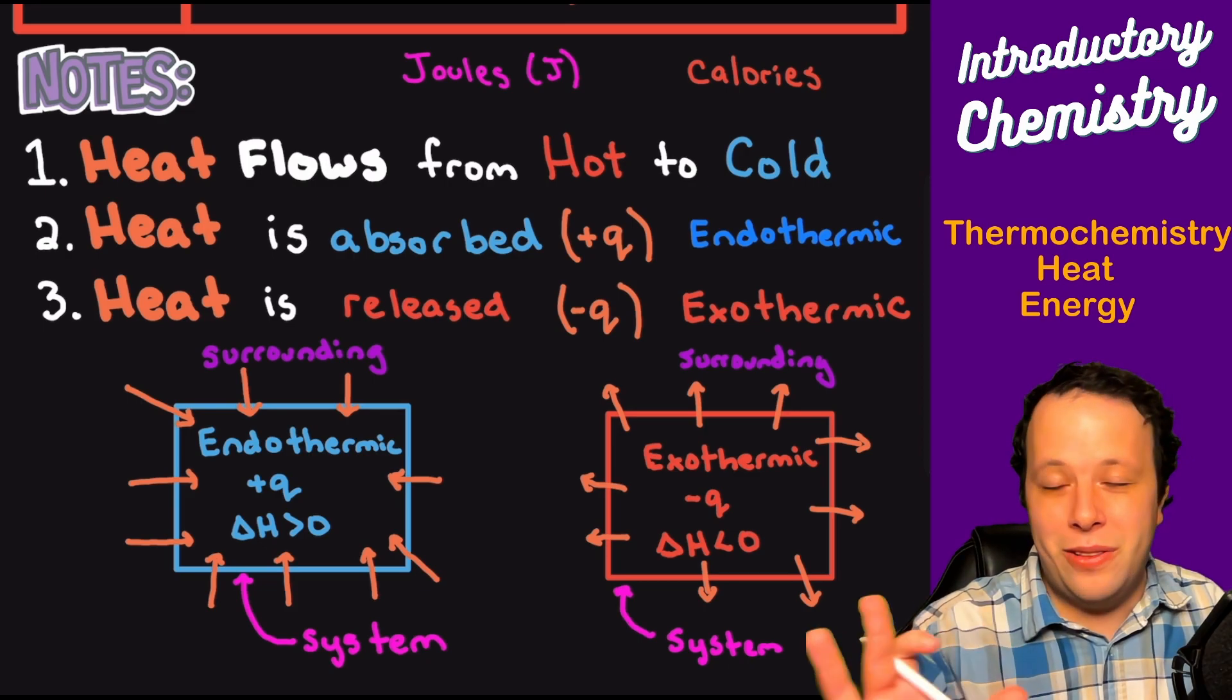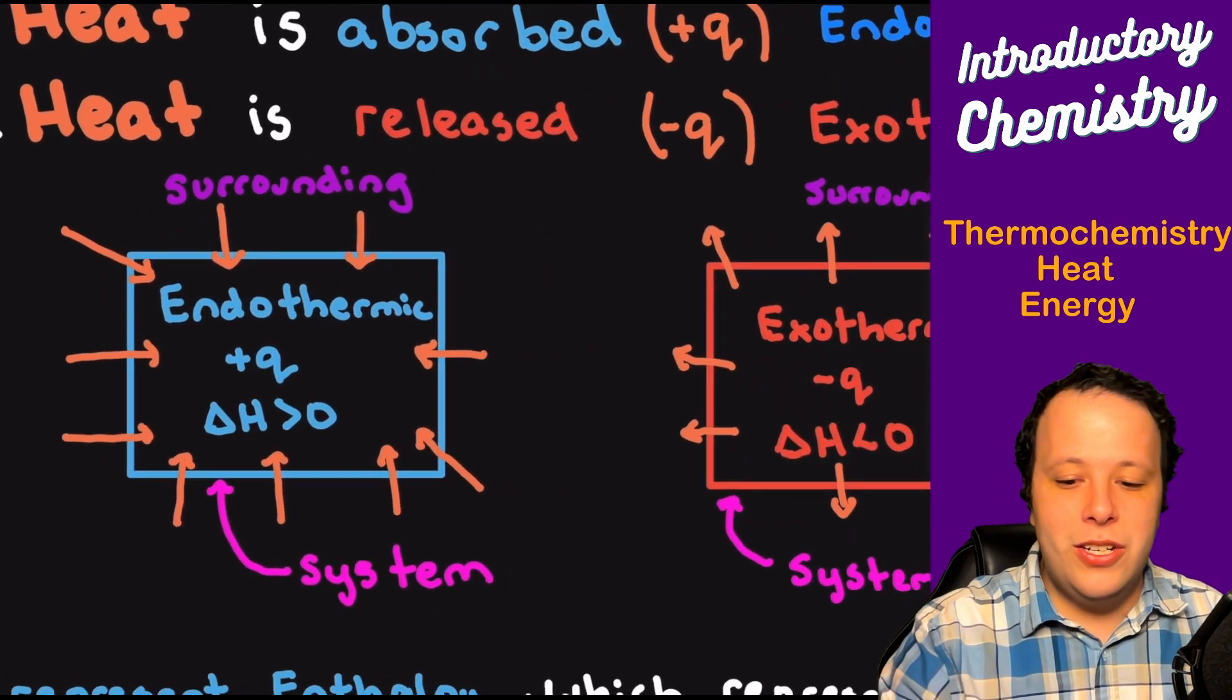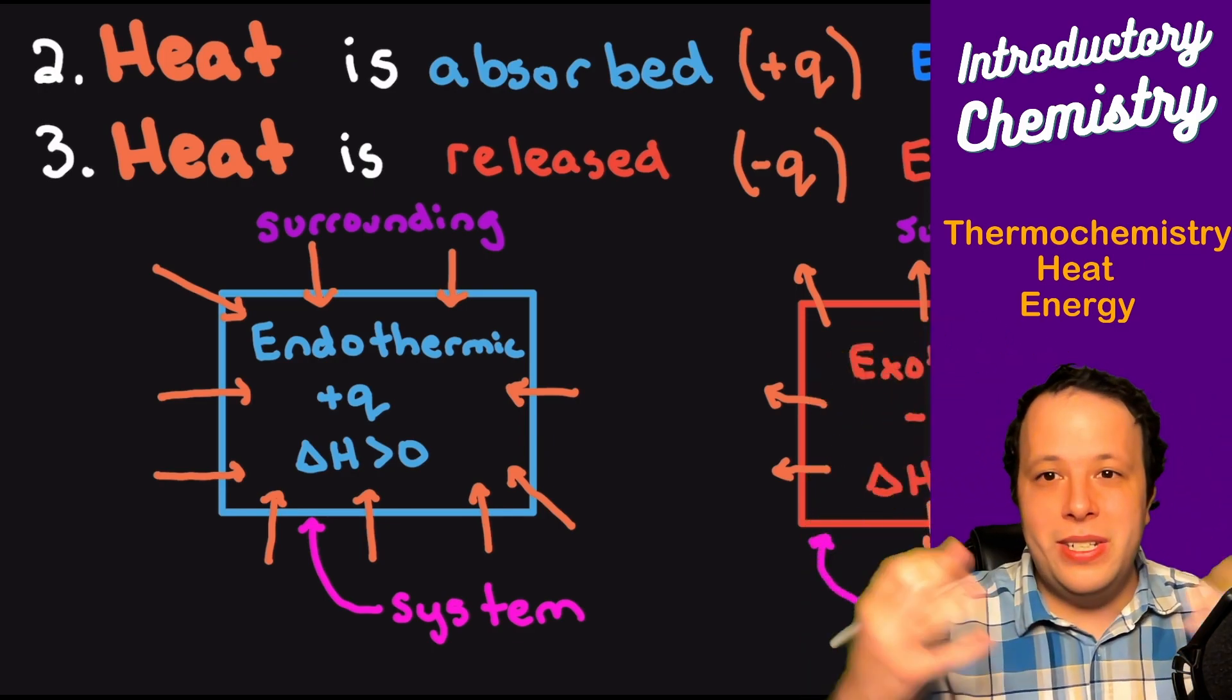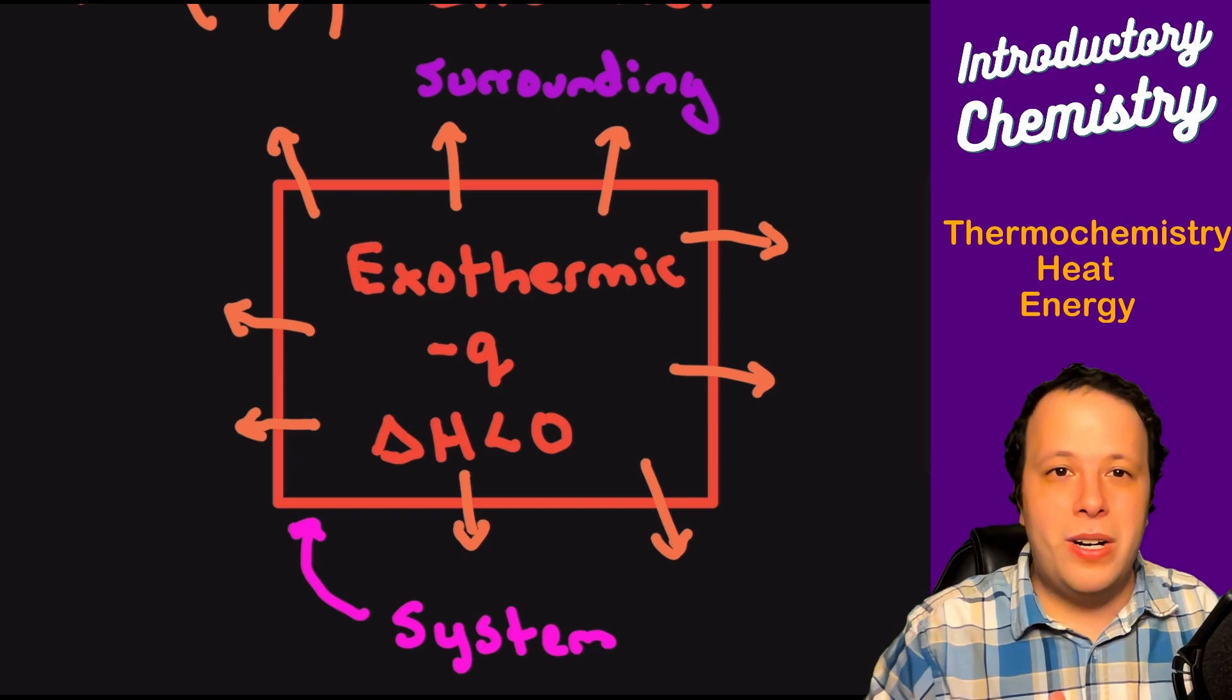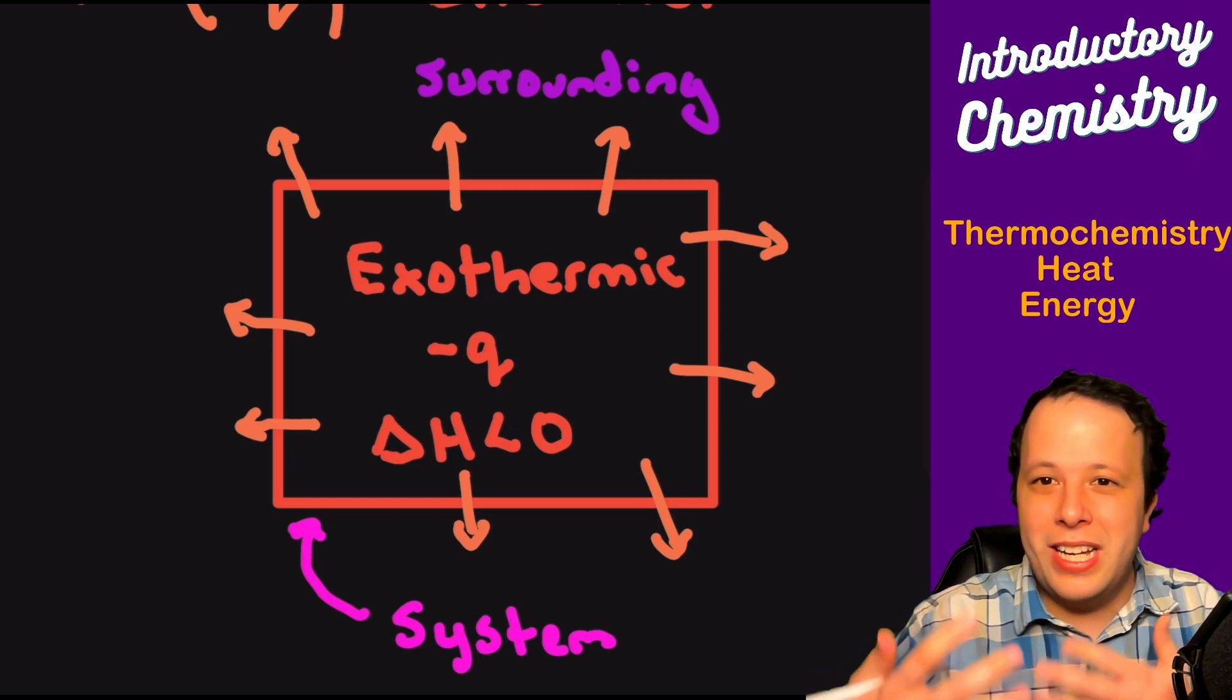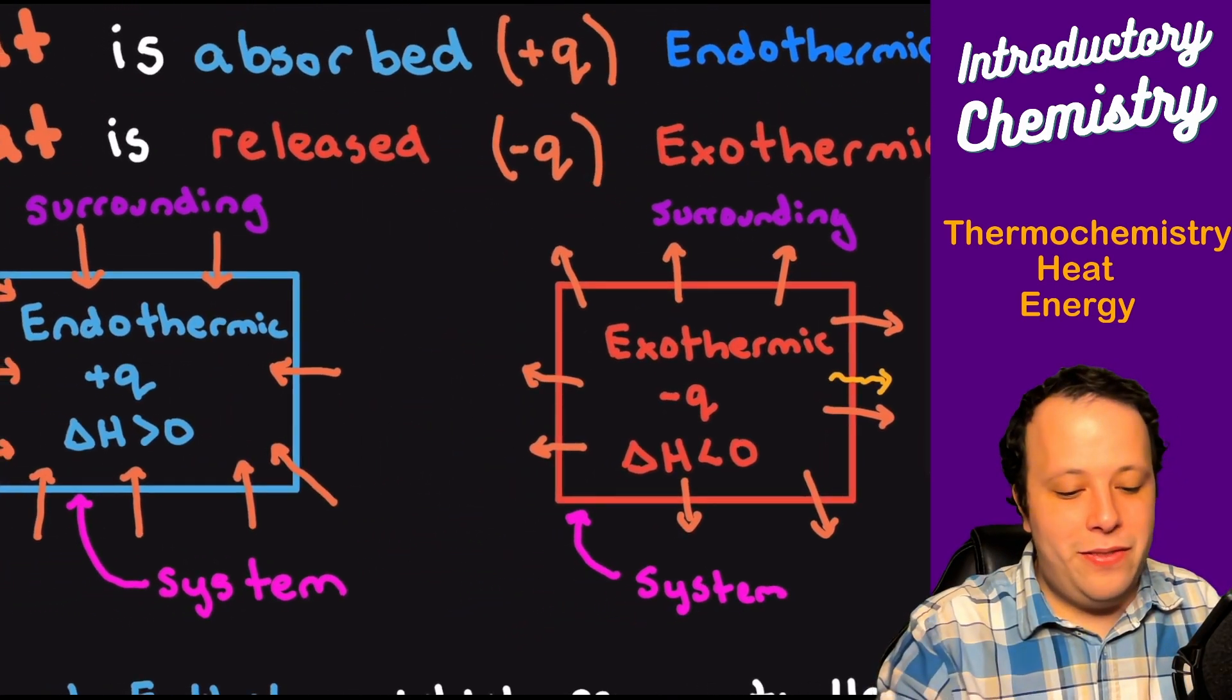The way we can show these and define how these systems work is by first defining what the heck is a system. A system is anything where the reaction is taking place. I drew these little boxes here—a blue box and a red box—that is our chemical system. The area around you is your surroundings. You can feel heat giving off from you. An example of an exothermic process is if you have a heat pack or heat wrap—you crack open the pack and it starts getting really hot. These orange lines show that heat is being released.